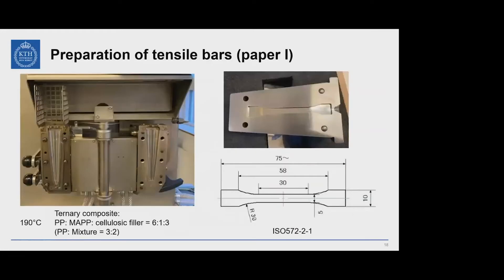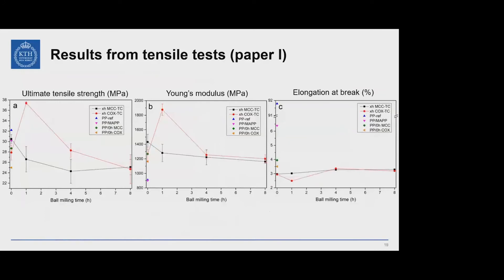The last step was preparing tensile bars. We mixed PP with our mixture at a mass ratio of 3:2, giving a PP:MAPP:cellulose filler ratio of 6:1:3, and sent the mixture to a mini injection molder to prepare standard tensile bars for tensile testing. Reference samples included pure PP (blue), PP with MAPP only (pink), PP with MCC only (green), and PP with COX only (yellow).